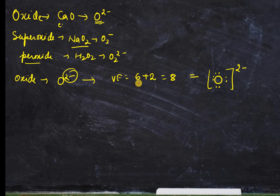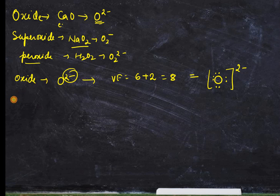Write it down with a 2 minus charge — that's it, isn't it simple? Since there is only one oxygen, in the Lewis dot structure we arrange all valence electrons surrounding the atom in pairs and write the charge as given in the formula. Now let's move on to superoxide.